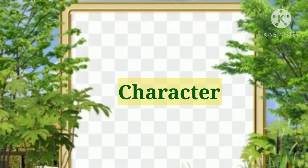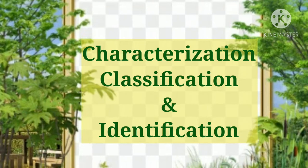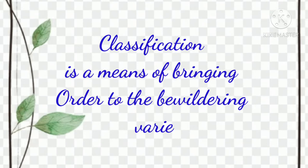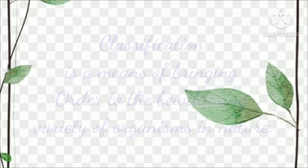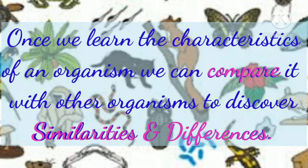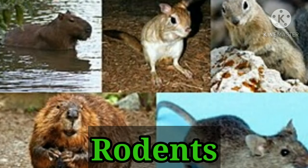Characterization, classification, and identification are major objectives in all branches of the biological sciences. Classification is a means of bringing order to the bewildering variety of organisms in nature. Once we learn the characteristics of an organism, we can compare it with other organisms to discover similarities and differences, and arrange similar things together in groups to distinguish these groups from one another.